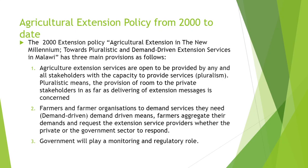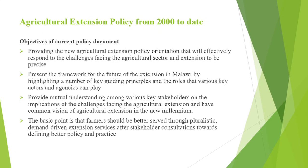The objectives of the current policy document are to provide a new agricultural extension policy orientation that will effectively respond to the challenges facing the agricultural sector and extension. Another objective is to present the framework for the future of extension in Malawi by highlighting a number of key guiding principles and the roles that various key actors and agencies can bring. Another objective is to provide mutual understanding among various key stakeholders on the implications of the challenges facing agricultural extension and to have a common vision of agricultural extension in the new millennium. The basic point is that farmers should be better served through holistic, demand-driven extension services after stakeholder consultations towards defining better policy and practice.